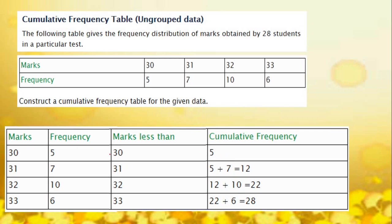For the next one, marks less than 31 means the 5 students also got marks less than 30, right? So we need to add 5 and 7 together. So it is 12.